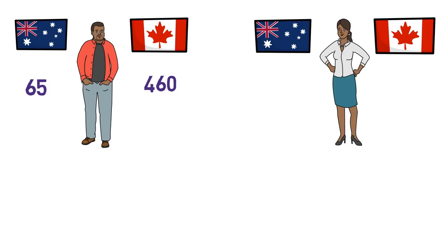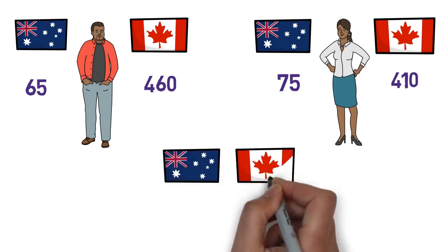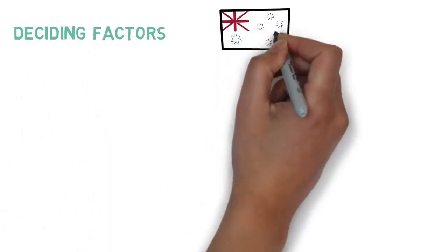With 460 CRS points in Canada, you'd get an invitation within the next draw — perhaps within 15 days. On the other hand, if you have 75 points for Australia but only 410 for Canada, the probability of getting an Australian invitation is higher — within a couple of months — while for Canada you'd need to wait or apply through a provincial nominee program. If you have very good or very low scores for both, consider the following deciding factors.